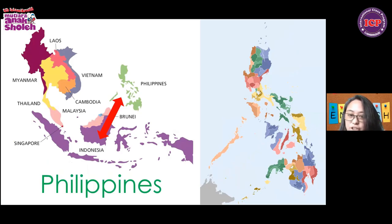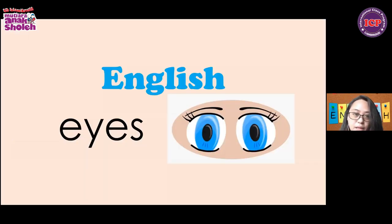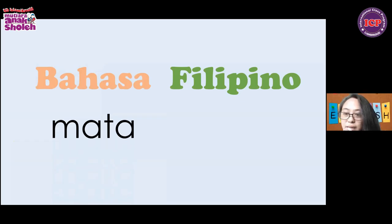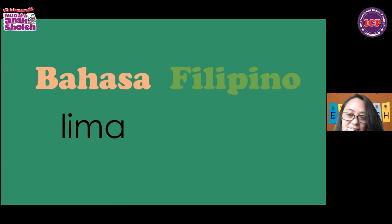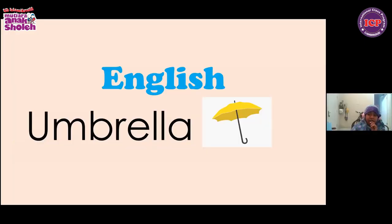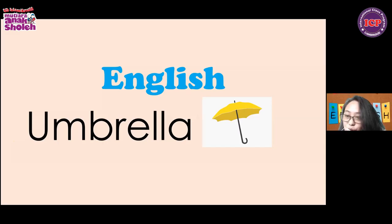Our countries are actually very near each other, so sometimes we have words that are the same. For example, what is the Bahasa or Indonesian word for eyes? In Filipino, in my language, it is called also mata. In the Philippines, what do you think number five means? Lima — also lima. In the Philippines, it's called payong, and in Indonesia it's also called payong. So if you think about it, our words are almost the same.